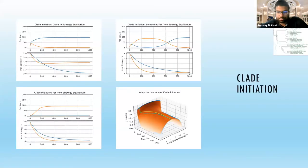First, we talk about clade initiation. What are the dynamics of the species upon initiation in a new environment? We're going to plot three things: when the initial strategy conditions are close, medium, and far from the strategy equilibrium. The top panel captures the population dynamics, and the bottom plot captures the strategy dynamics.